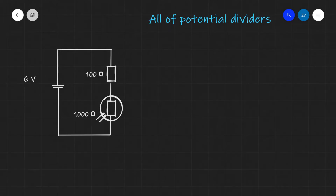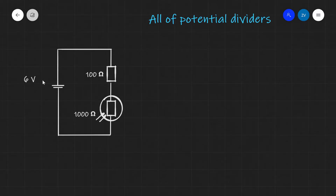Now first off, what is a potential divider? In electronics we need different amounts of potential differences for various different components and different pieces of equipment. For instance, we may be given a 6 volt cell as illustrated here, however we can control the amount of voltage output by adding in some resistors in the circuit.